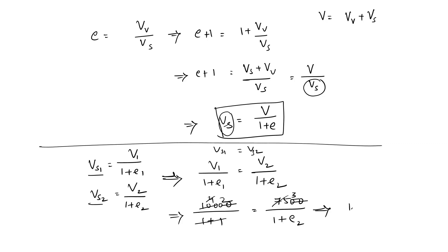Now, 1 plus E2 is 3 by 2, isn't it? Then E2 is 1.5 minus 1. Therefore, E2 equal to 0.5.